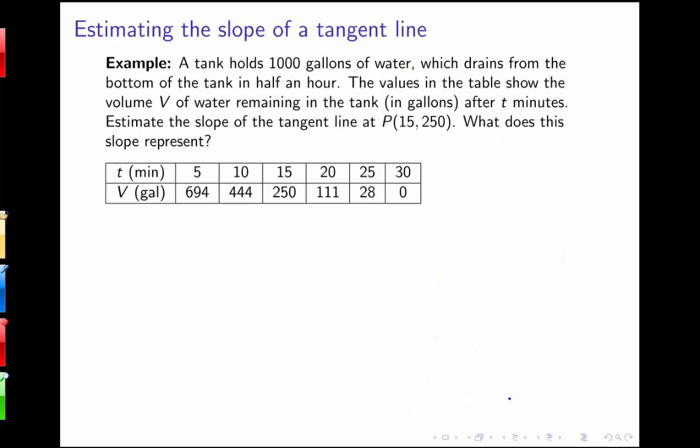Let's look at another example where we need to find the slope of a tangent line, but instead of an algebraic equation, we're given a table of values. We have a tank that holds 1000 gallons of water, which drains from the bottom in half an hour. The table shows the volume of water remaining in gallons after 5, 10, 15, 20, 25, and 30 minutes. We're interested in estimating the slope of the tangent line at point p, where p is 15 comma 250.